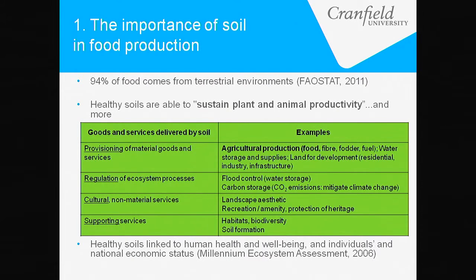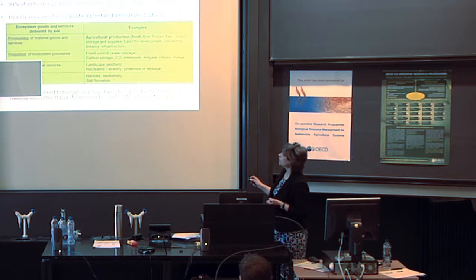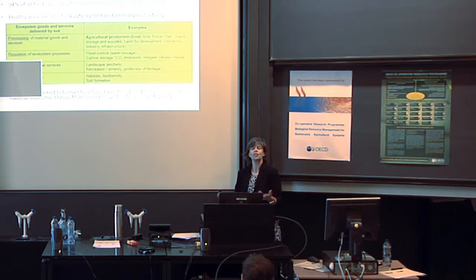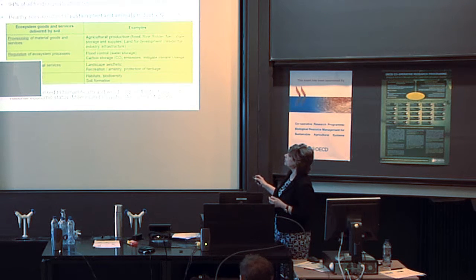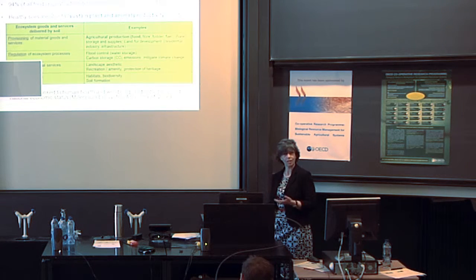Look at these other services we get from soils: they regulate our ecosystem processes — for example, flood control. Soils are critical to managing water: they help drain water away preventing flooding, but also retain water to reduce irrigation demand. We've talked this morning about increasing irrigation, but the infrastructure and costs associated with that investment are huge. Going further down the list, there are cultural services like the landscape aesthetic we love in England — our green and pleasant land — and that comes from soil.